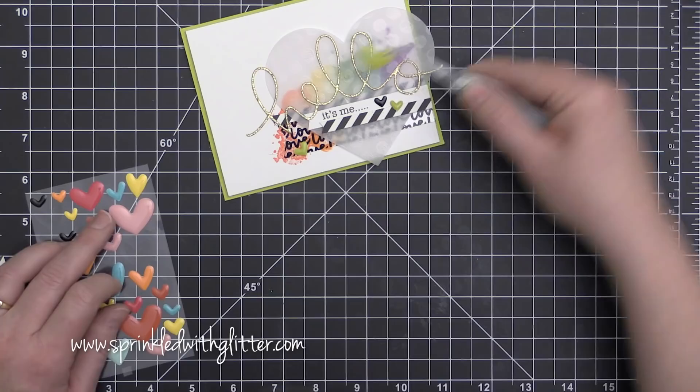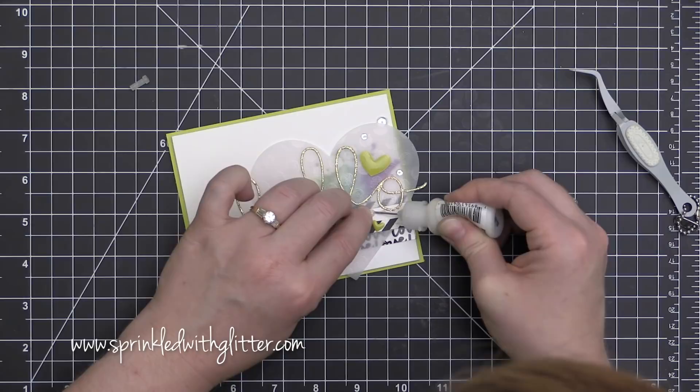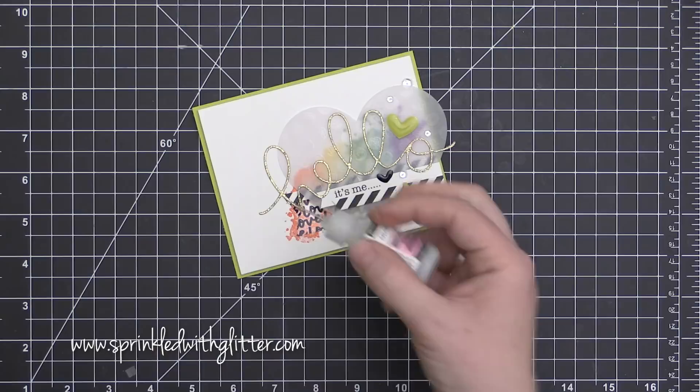We're gonna put some hearts like that. Hearts, take that one off, don't like it. Take that one off, don't like it. I'm gonna put this one on, even though it looks the same as the other heart. I don't know what that's all about.